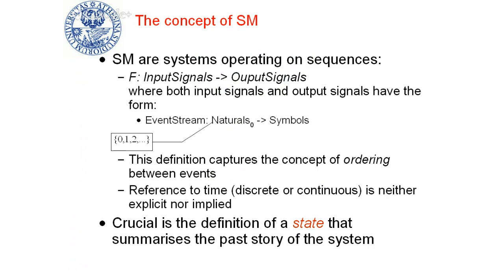What is interesting is the position with which a given symbol appears in our sequence. Our reference to time for now is not explicit, not implied — we don't care about it. As the name says, critical to the definition of a state machine is the definition of a state. What is a state for a state machine system is whatever summarizes the impact that the past values in the input signals have on the behavior of the system.